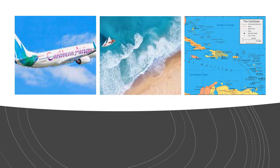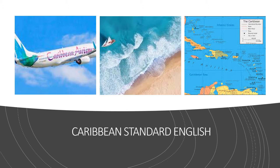Officially, there are six languages spoken in the Caribbean. However, we will be focusing on Caribbean Standard English. Caribbean Standard English is a general term for the many varieties of the English language used in the Caribbean archipelago and on the Caribbean coast of Central American territories. Each territory, however, has their own Creole language.